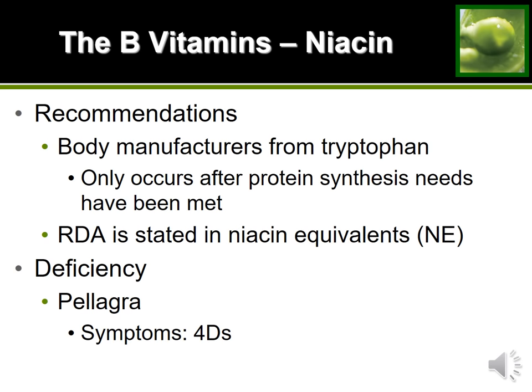One unique thing about niacin is that our body can actually manufacture it using the amino acid tryptophan. If you have excess tryptophan, the body can convert it into niacin. This is why you might see the RDA written as niacin equivalents instead of milligrams or micrograms — it counts both tryptophan being converted into niacin and any niacin already present in foods.